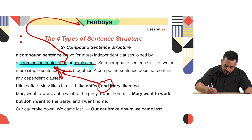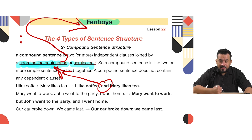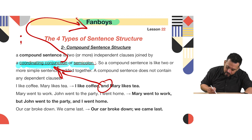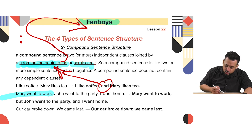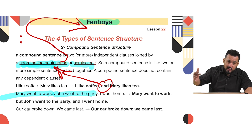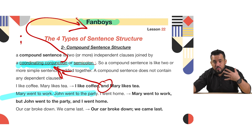Coordinating conjunctions are FANBOYS — we'll talk about FANBOYS in detail in a moment. Here are two more simple sentences: 'Marie went to work' — Marie is the subject, 'went' is the verb, 'to work' completes the thought. 'John went to the party' — John is the subject, 'went' is the verb, 'to the party' completes the thought. Each is one independent clause.